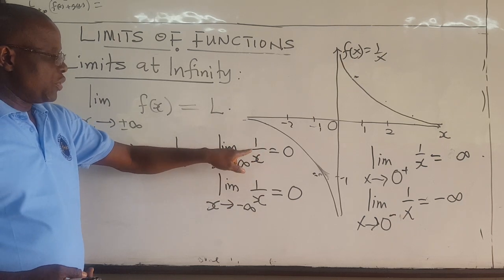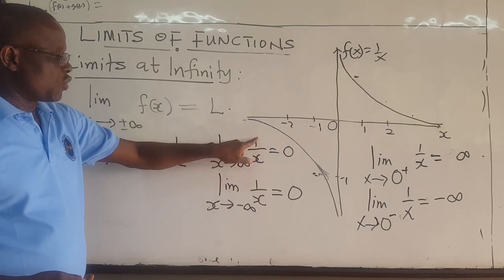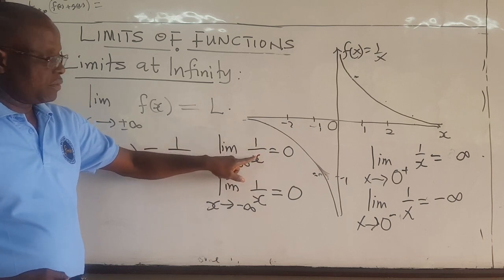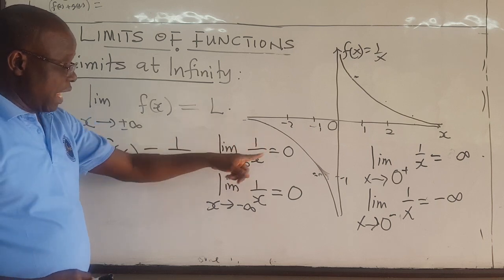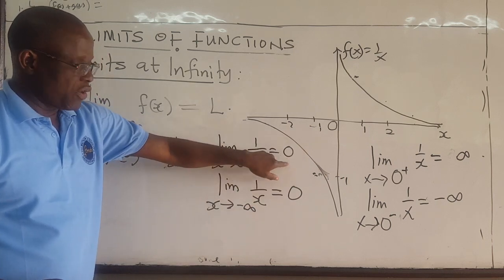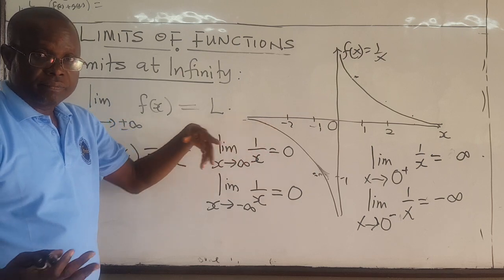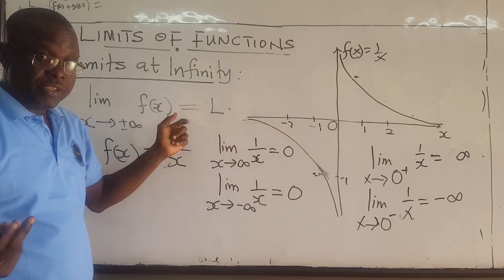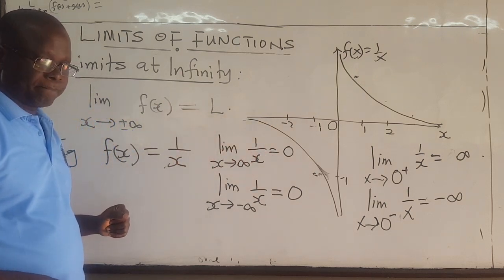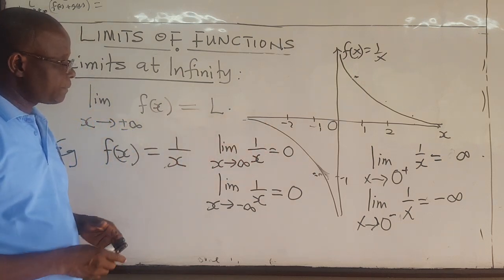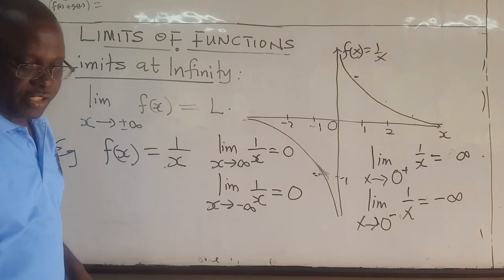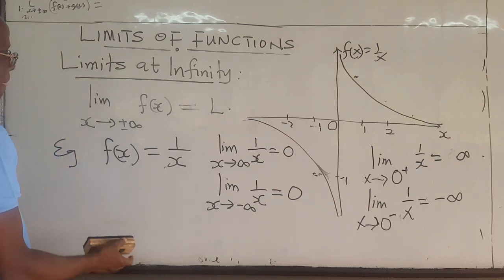Suppose that this is not 1 over x but some other function. Can you determine the number? Will it be 0 or 1 or infinity? What will that mean? So this is an introduction to limits at infinity.